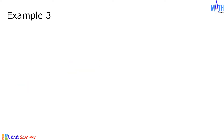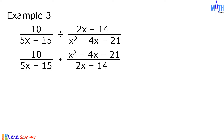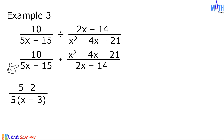Next example: 10 over 5x minus 15, divided by 2x minus 14 over x squared minus 4x minus 21. Since this is division, let us multiply the dividend by the reciprocal of the divisor. We have 10 over 5x minus 15, multiplied by x squared minus 4x minus 21 over 2x minus 14. Factoring: 10 is 5 times 2, and 5x minus 15 is equal to 5 times (x minus 3).